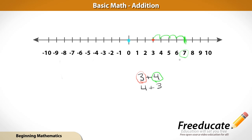So no matter which way you do it, which number you start with, in addition, it's always going to be the same. This one is equal to seven as this one is also equal to seven.